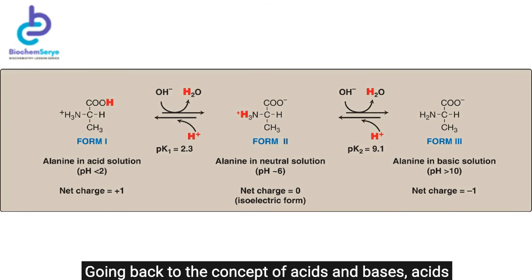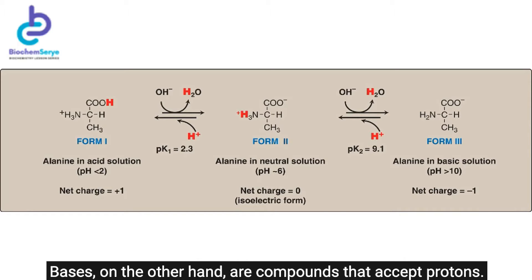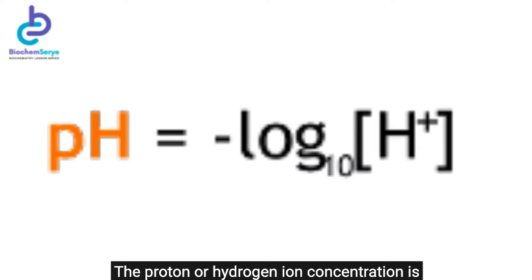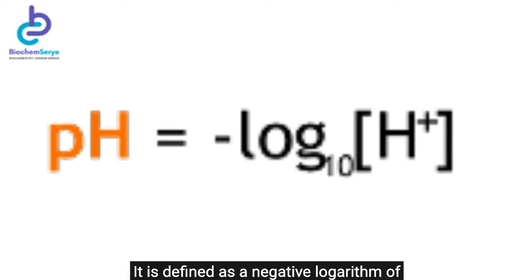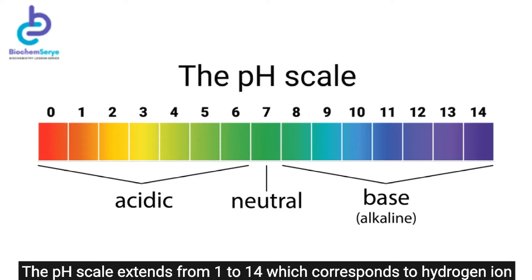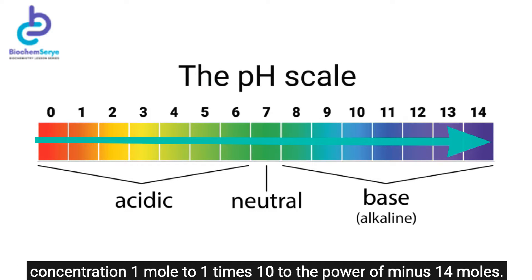Going back to the concept of acids and bases: acids are compounds that give protons on dissociation, while bases are compounds that accept protons. The proton or hydrogen ion concentration is quantitatively expressed as pH, defined as the negative logarithm of the proton or hydrogen ion concentration. The pH scale extends from 1 to 14, corresponding to hydrogen ion concentrations from 1 mole to 1×10⁻¹⁴ moles.